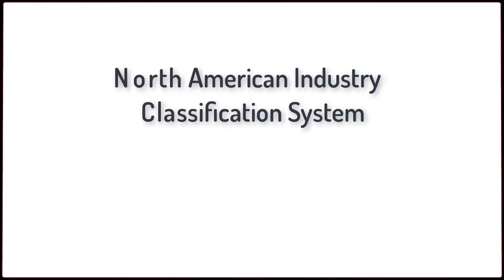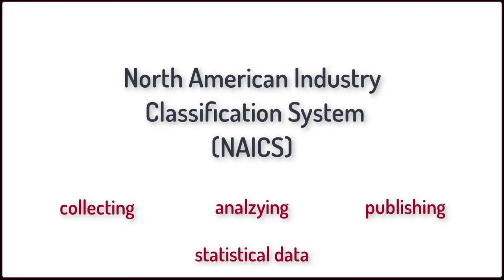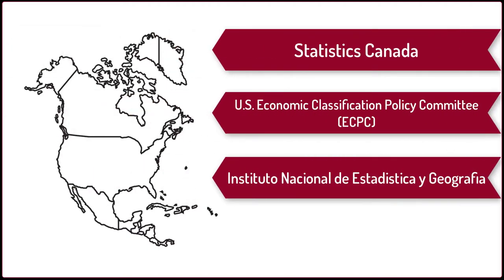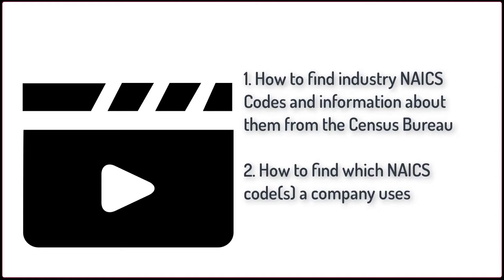The North American Industry Classification System, or NAICS, is the standard used by federal statistical agencies in classifying business establishments for the purpose of collecting, analyzing, and publishing statistical data related to the U.S. business economy. It was developed by the U.S., Canada, and Mexico to allow for a high level of comparability in business statistics among North America. It is important to note that businesses self-assign NAICS codes to themselves. This video will cover how to find industry-specific NAICS codes and information about them through the Census Bureau, and how to find out what NAICS codes a company has assigned to itself.